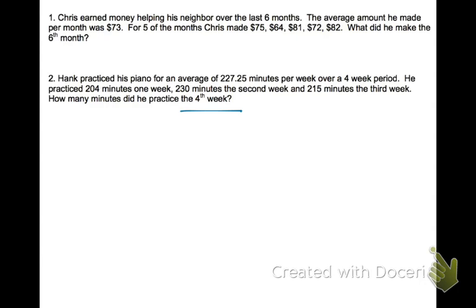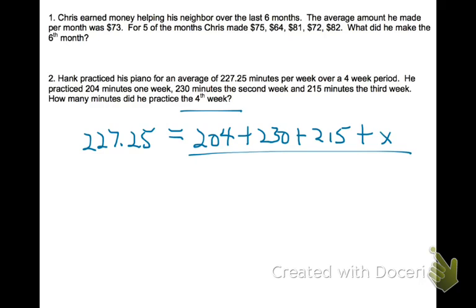So this is like number 1. We know what the average, or the mean, is, which is 227.25. To find the mean, we add up the values that we know. We don't know one of those values, so we'll just put a variable for it and divide by the total number, which is 4.